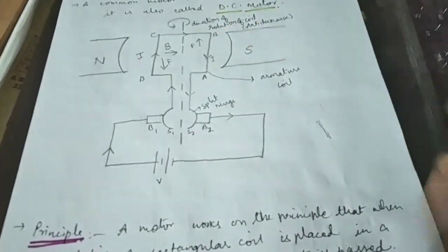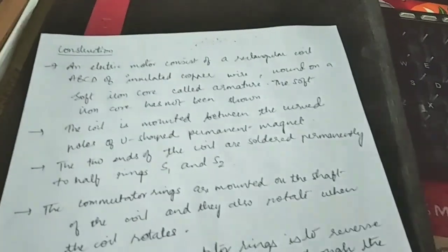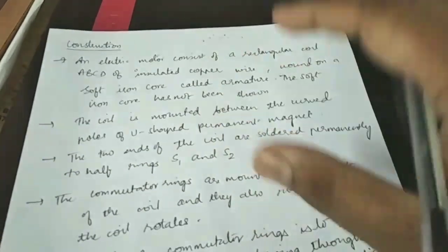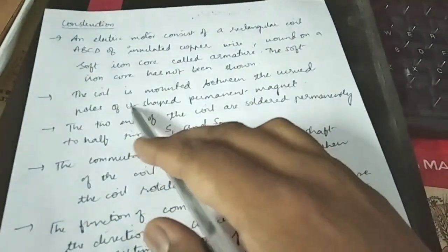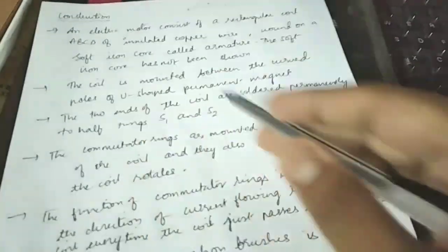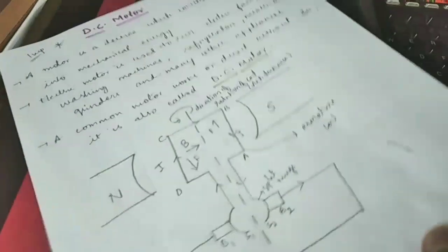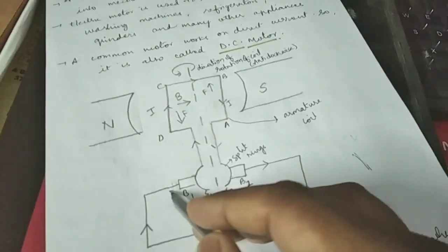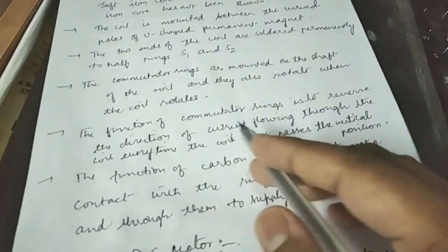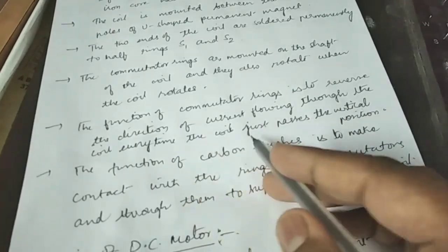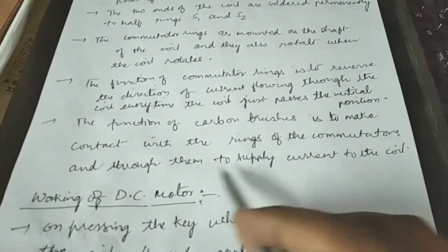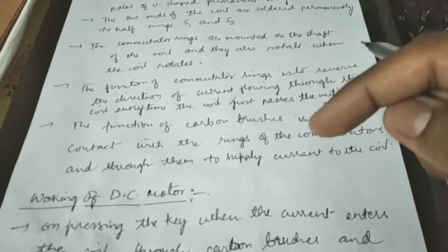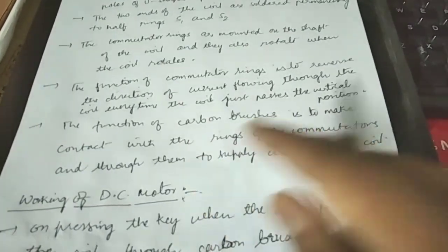The question is how to find the direction of force. Coming to construction: the electric motor consists of a rectangular coil ABCD of insulated copper wire. The coil is mounted between the curved poles of a U-shaped permanent magnet. The two ends of the coil are soldered to half-rings S1 and S2, connected to brushes B1 and B2, which connect to the voltage. The function of the commutator rings is to reverse the direction of current flowing through the coil whenever the coil passes through the vertical position.